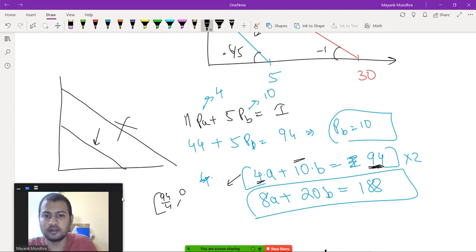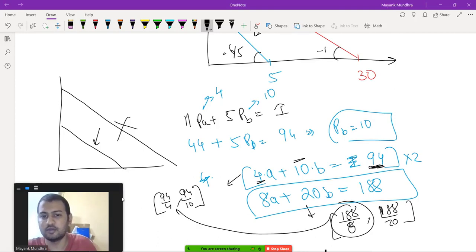That is 94 by 10, and the intercepts of this equation are going to be 188 by 8 and 188 by 20. So the intercepts are still the same. 188 by 8 is same as 94 by 4, and 188 by 20 is same as 94 by 10.